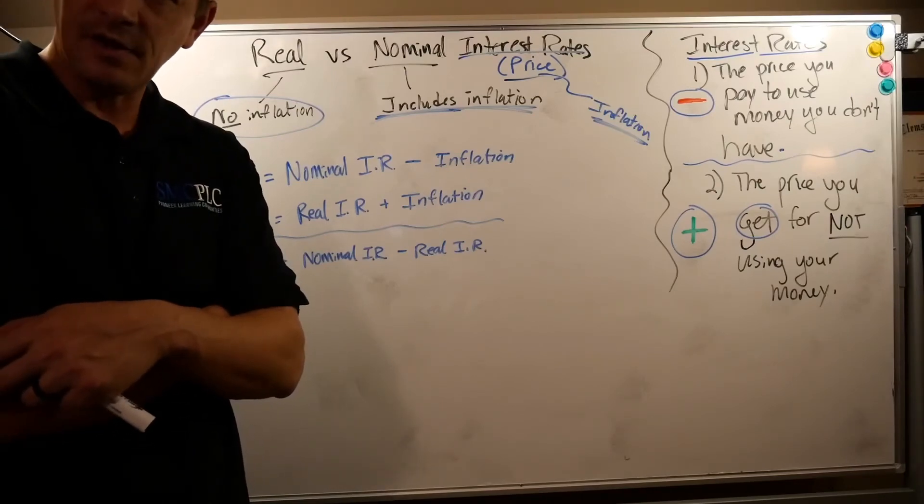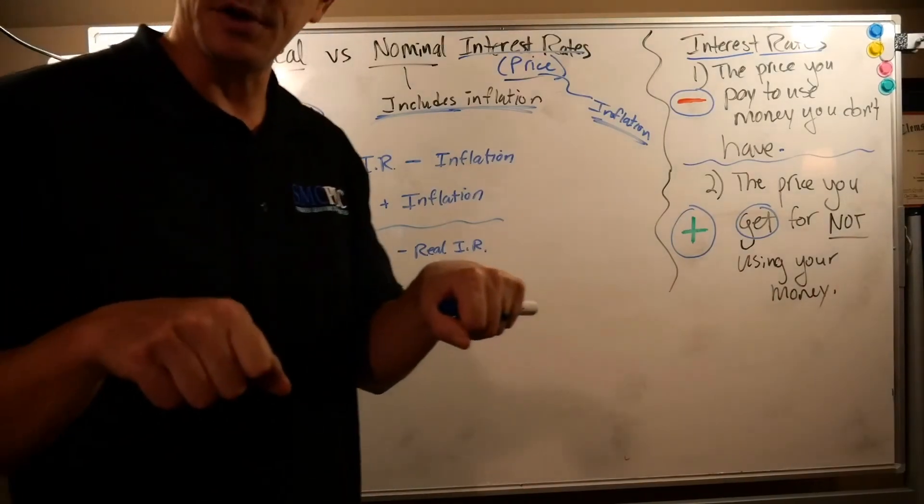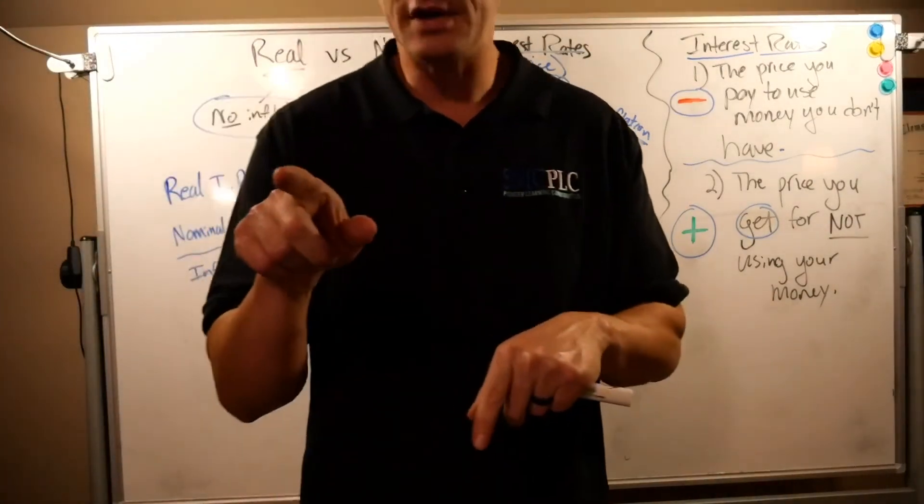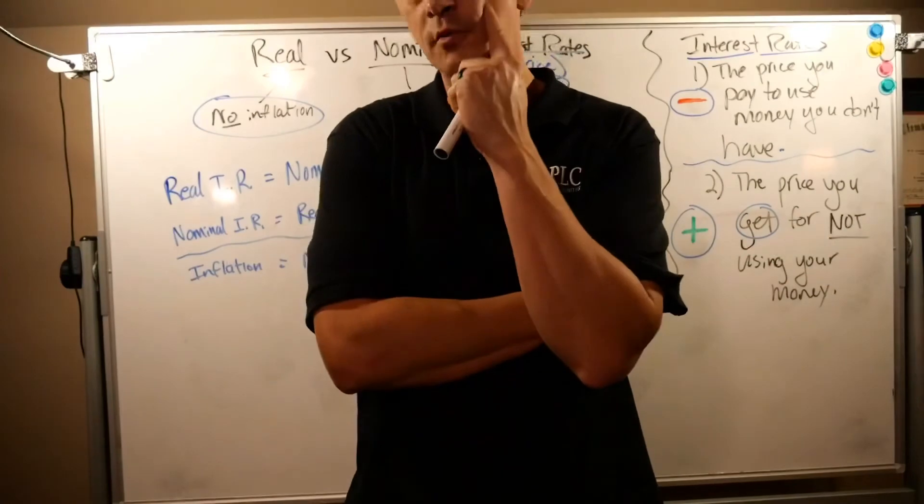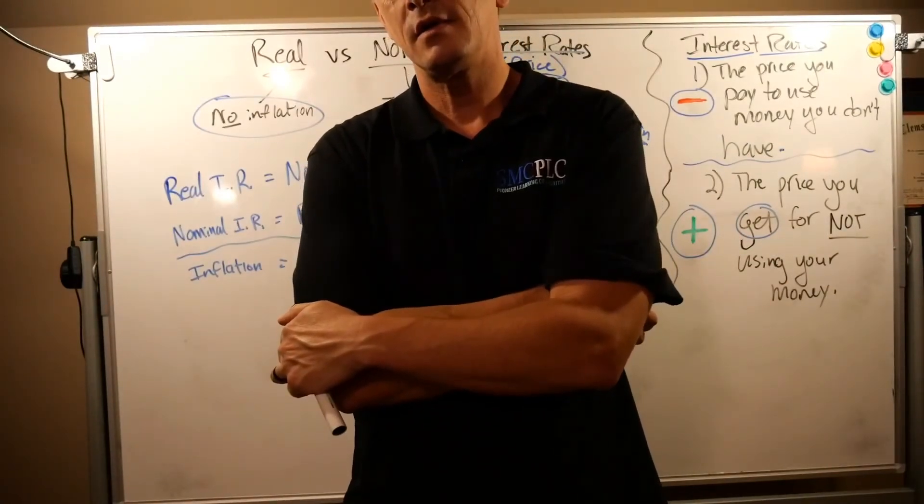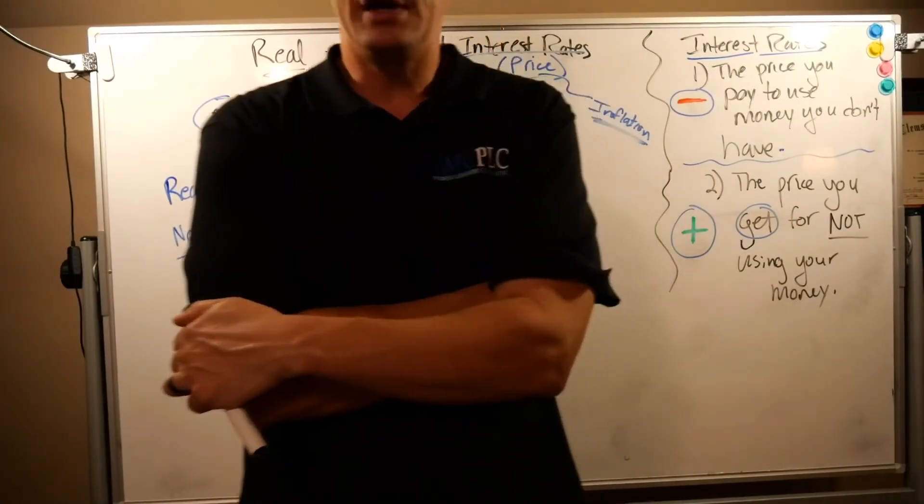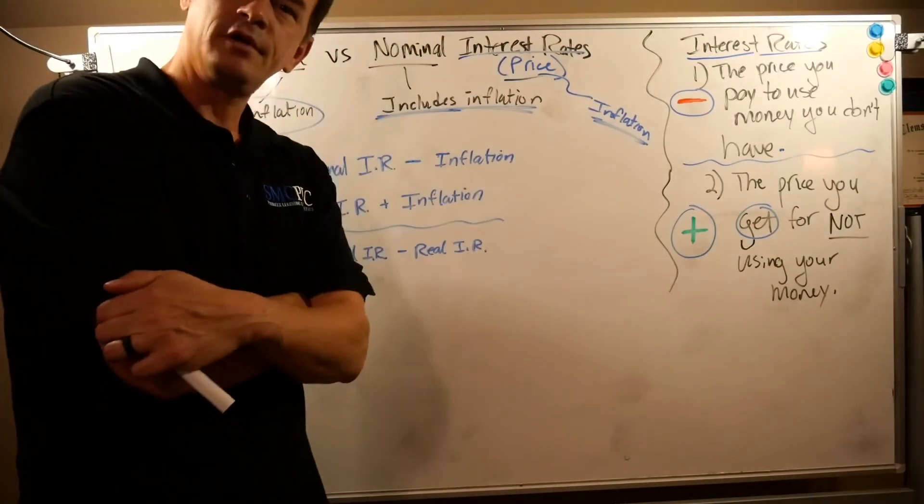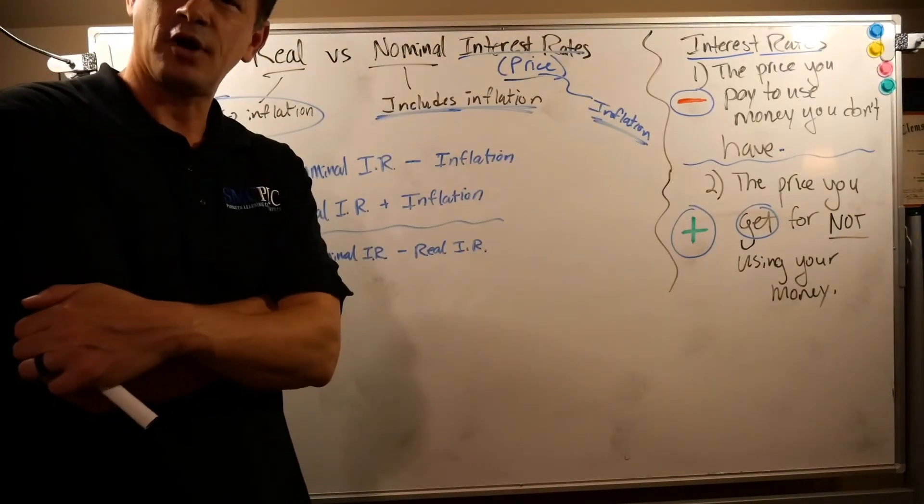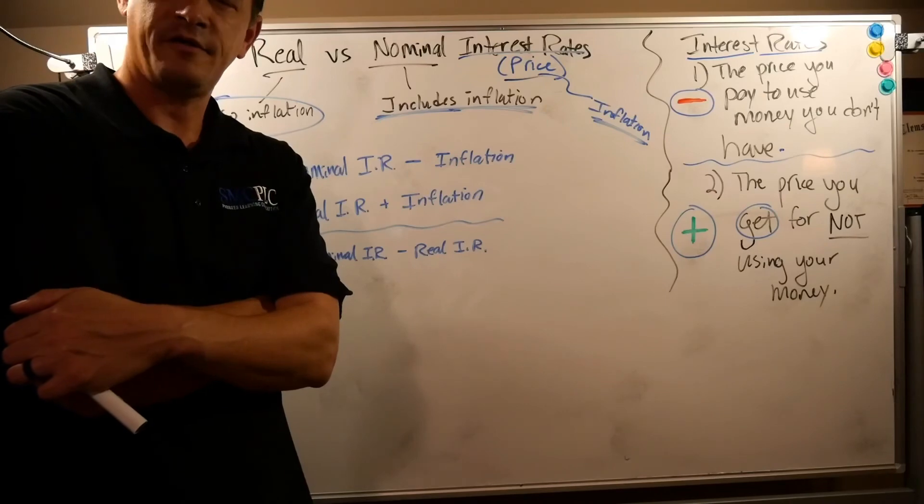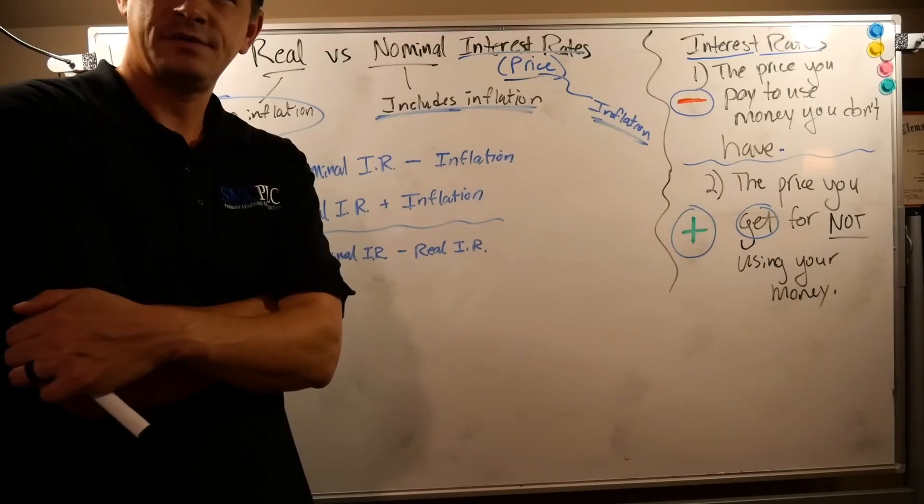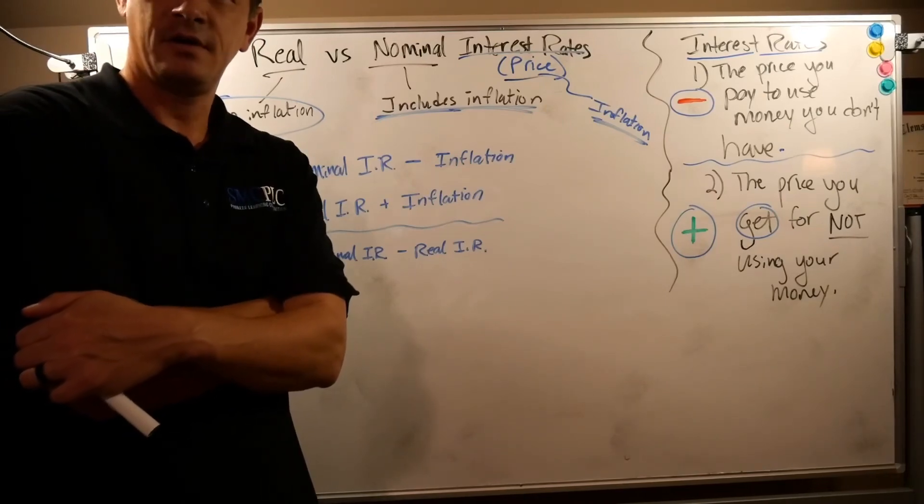Here we are back where we started, pushing our cart around Costco, and the big question is: are you paying attention to inflation? Can you put more things in that cart or less? Hopefully after this chapter you can answer that question. Now you know what real and nominal interest rates are—they're just prices. Real: no inflation. Nominal: it's just today's price, includes inflation. Good chat.